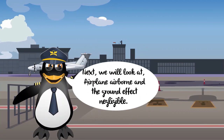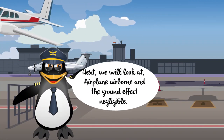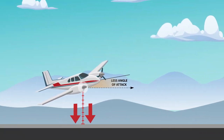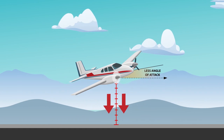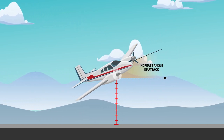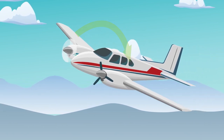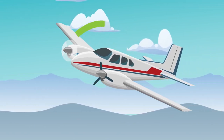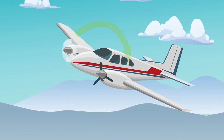Next, we will look at airplane airborne and ground effect negligible. To maintain the same amount of lift in ground effect than out of ground effect requires less angle of attack. When flown out of ground effect, you must increase your AOA, which increases your left turning tendency, aiding in a yawing motion towards the inoperative engine. Thus, flying out of ground effect increases VMC.